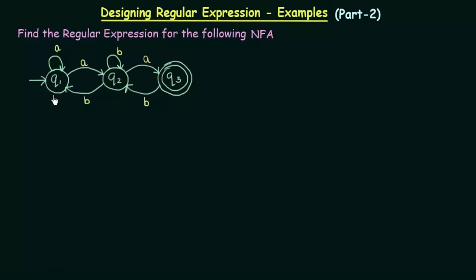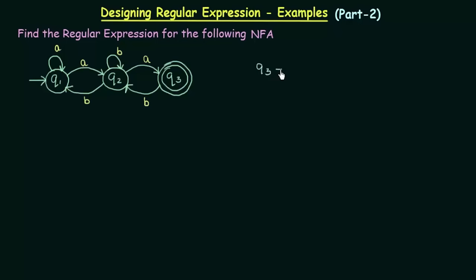Here we see that we have three states Q1, Q2 and Q3, where Q1 is the starting state and Q3 is the final state. First of all, let us write the equations for the states. Let's start with the final state, that is Q3.